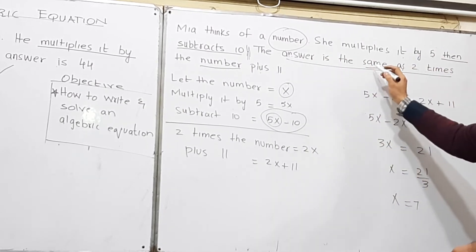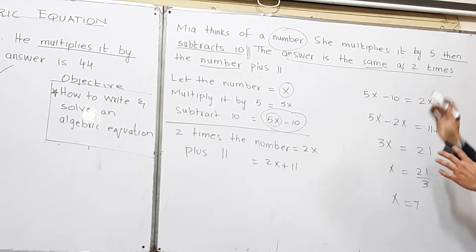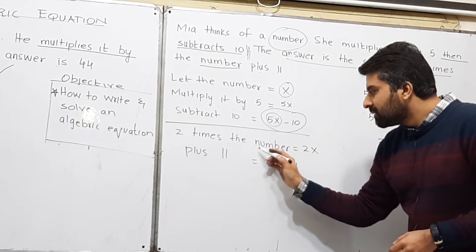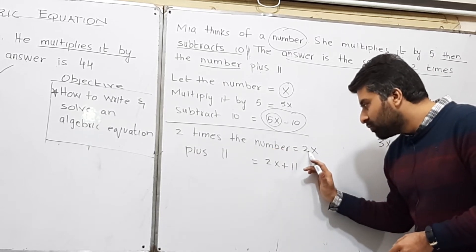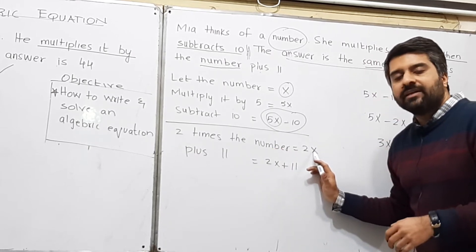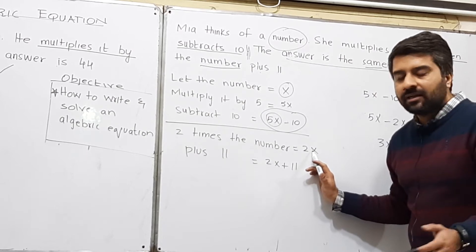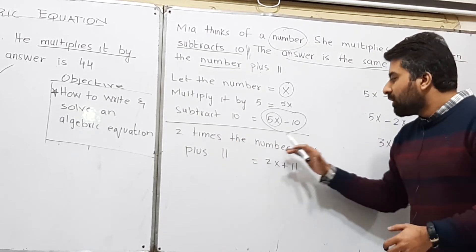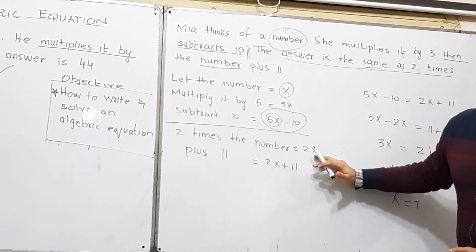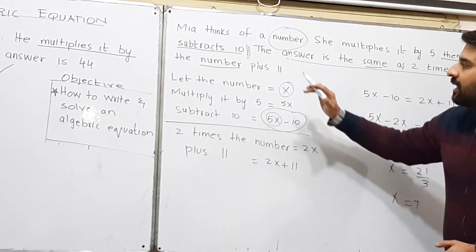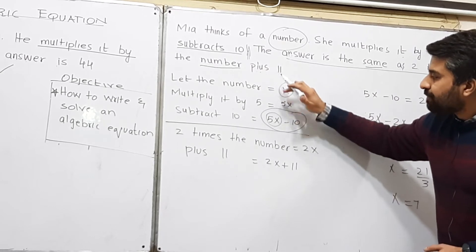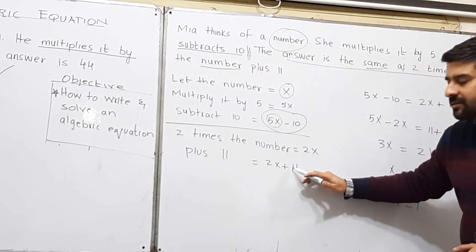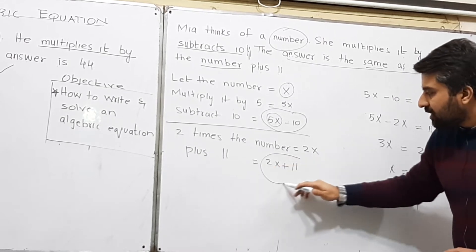The answer is same as 2 times the number. 2 times the number means you are going to multiply by 2 with the number, and the number is x. 2 times means multiply 2 by x plus 11. So plus 11 is 2x plus 11. Now your answer is equal to this one.